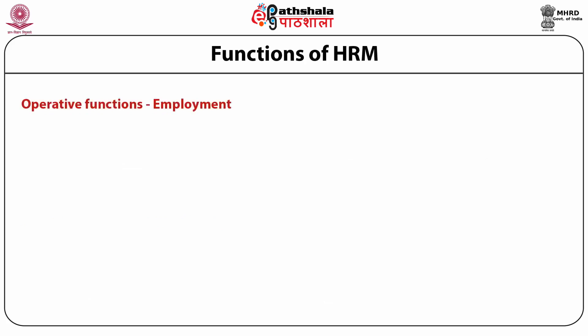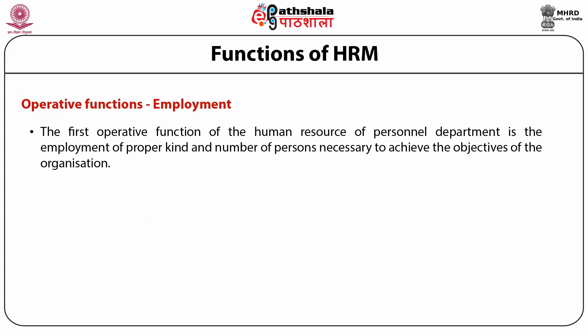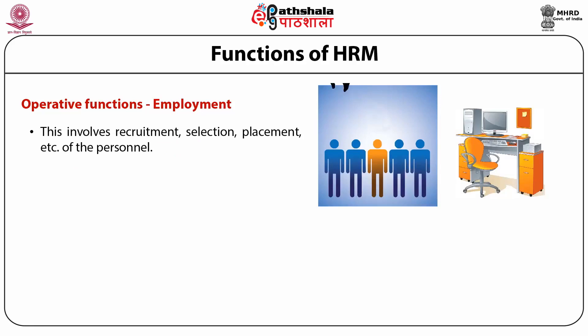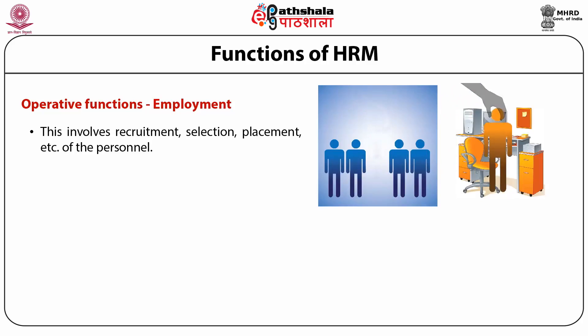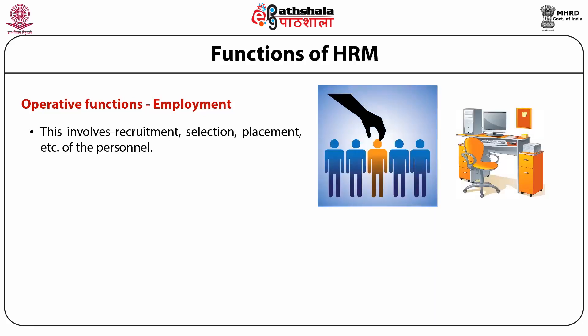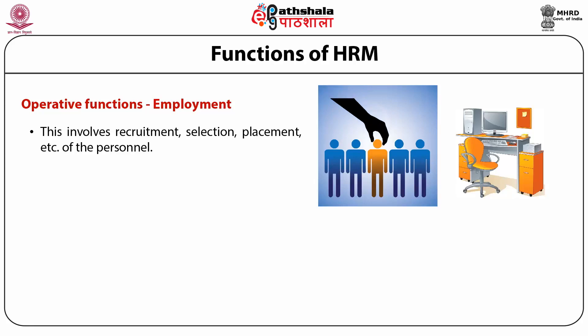Operative function — Employment: The first operative function is the employment of the proper kind and number of persons necessary to achieve the objectives of the organization. This involves recruitment, selection, placement, training and development of personnel. Before these processes are performed, it is better to determine manpower requirements both in terms of number and quality of personnel. Recruitment and selection cover the sources of supply of labor and the devices designed to select the right type of people for various jobs. Induction and placement of personnel for better performance also come under the employment function.